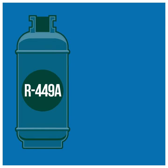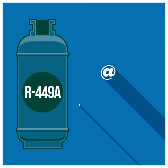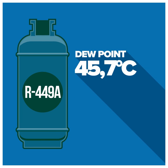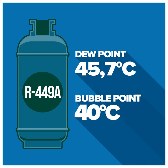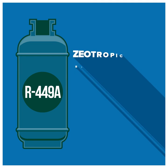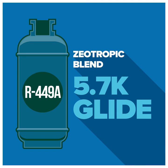For example, R449A at one bar has a dew point — that's the point of condensation — of 45.7 degrees Celsius, and a bubble point — that's the point of evaporation — of 40 degrees Celsius. This means that this particular zeotropic blend would have approximately 5.7K of glide.